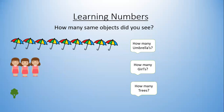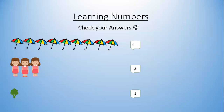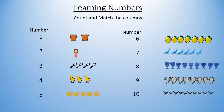How many same objects did you see here? How many umbrellas — just count them. Good. How many girls? How many trees? Very good — you did it! Now let's check the answer. One, two, three, four, five, six, seven, eight, nine — there are nine umbrellas. How many girls? One, two, three — there are three girls.